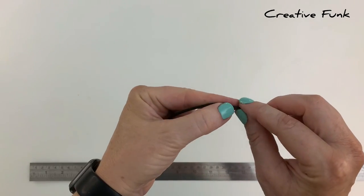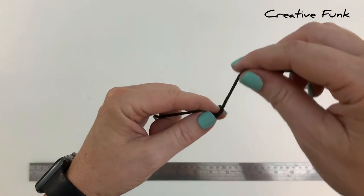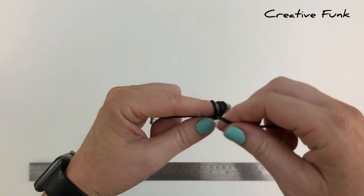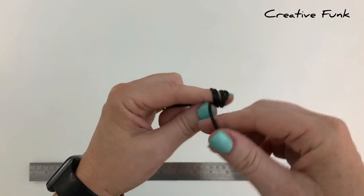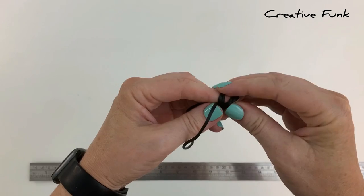Then bring the right end of the cord around your finger four times to make four full loops around. Then you can gently bring these four loops off your finger.